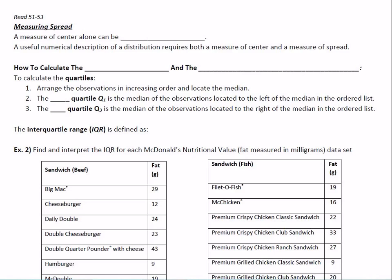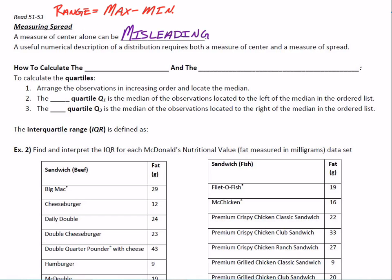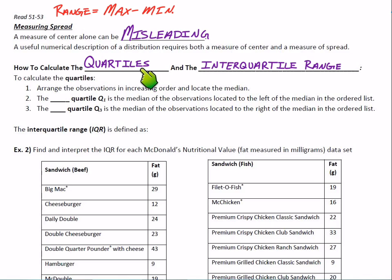Now let's talk about measuring spread — how wide a distribution can be. The most common measure is just the range: the maximum value minus the minimum value, the biggest minus the smallest. A measure of center alone can be misleading, so we may also need to mention spread in the conversation. Another measure of spread is quartiles and the interquartile range. Quartiles — think about the root word being quarters, so 25%.